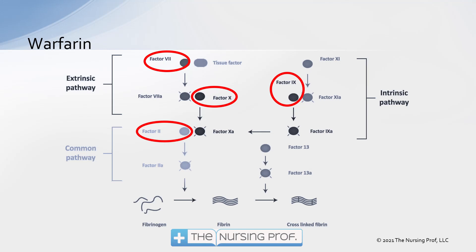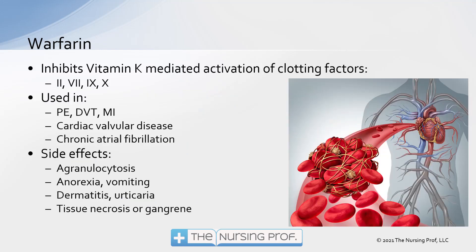Warfarin is one of the common anticoagulants we use with our patients. There are multiple ways warfarin works to block the clotting cascade: starting at the top, there's factor 7, factor 10, factor 9, and then down into the common pathway with factor 2. So warfarin blocks multiple factors in the clotting cascade to prevent clot development.